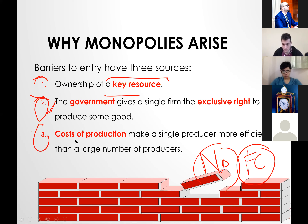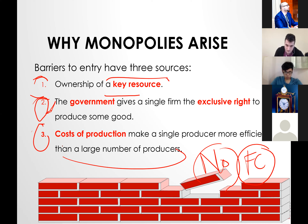The third source is that cost of production makes a single producer more efficient than a larger number of producers. We'll talk about that — this is especially very important.